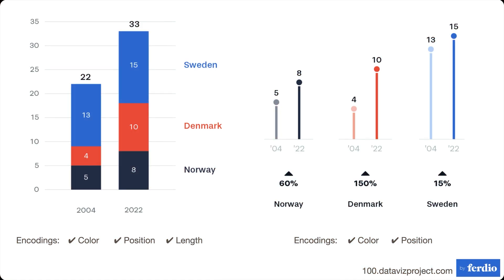The next thing the stacked bar chart has going on is also length — line length. In order to interpret the difference for Denmark from 2014 to 2022, you have to look at the length from one point to another and compare it. Of course, it has the numbers on there, so you don't have to do the calculation. But the actual encoding being used is length, not position, because you have to look at two relative positions to sort that out. So this particular stacked bar chart is using both position and length.